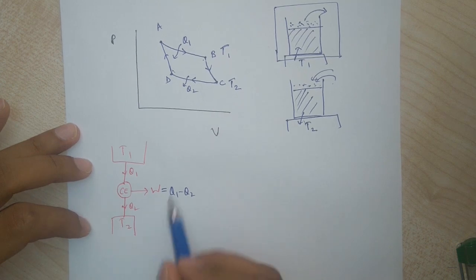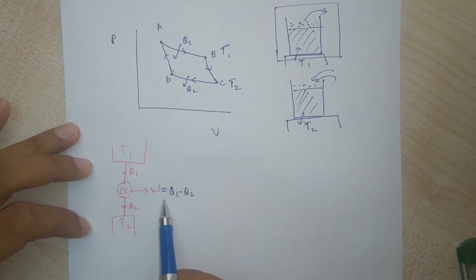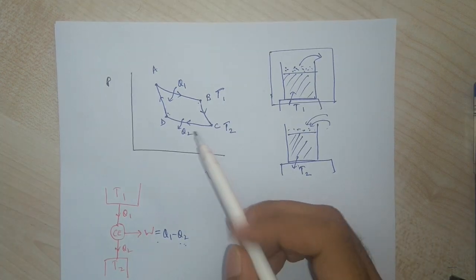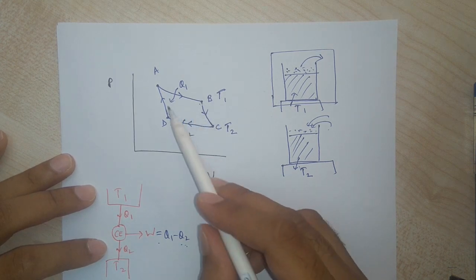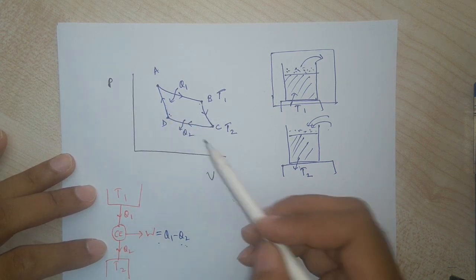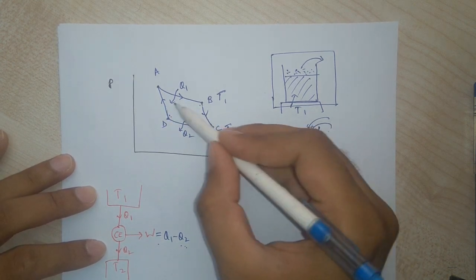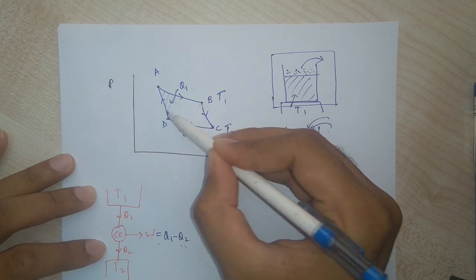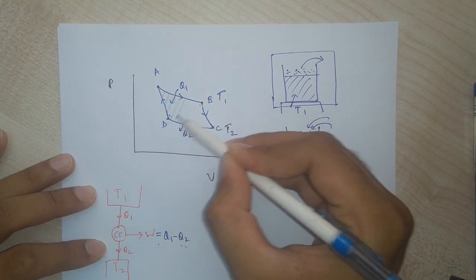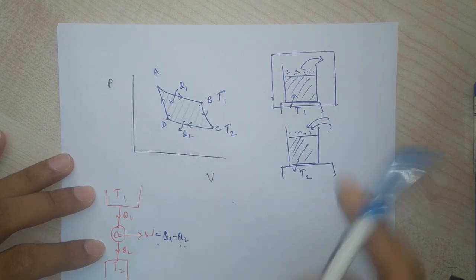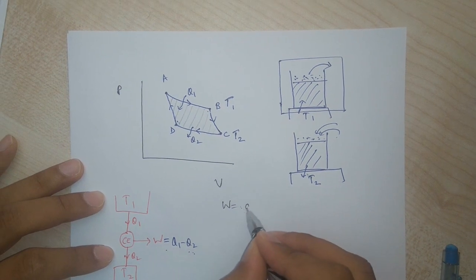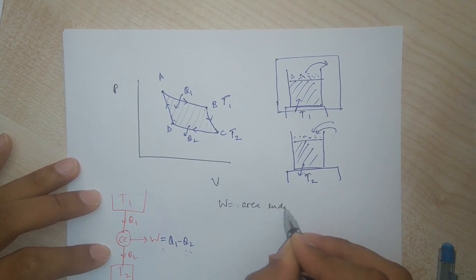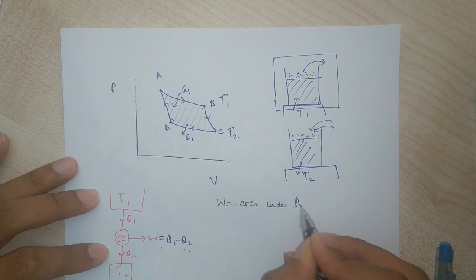The work done from the schematic was Q1 minus Q2. The work done in the process A, B, C, D, A from the PV diagram is nothing but the area under the curve.